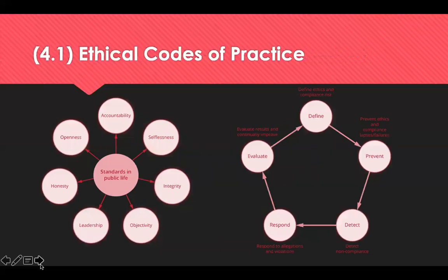A code of ethics is a set of morals, values and principles set out by an organisation to display what they deem to be acceptable conduct and behaviour. It outlines the values and missions of an organisation and states how professionals should behave and perform within their role. It could contribute towards the application of responsible sourcing and is based on Nolan's seven principles of public life, identified in 1995: accountability, selflessness, integrity, objectivity, leadership, honesty and openness. It is also determined by an organisation's mission statement and values.